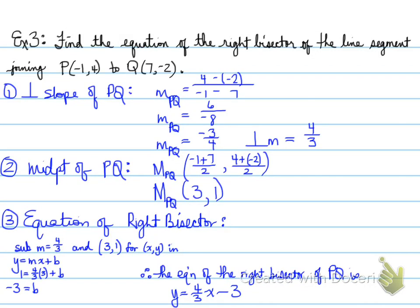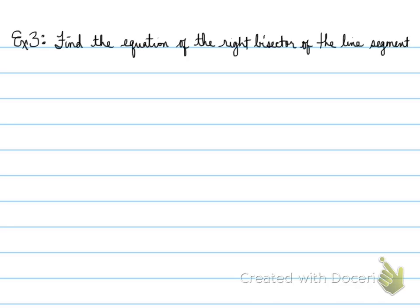Okay, so again, this is where we were. Let's go back to the beginning of the page and start again. So example three, you're asked to find the equation of the right bisector of the line segment joining P to Q.